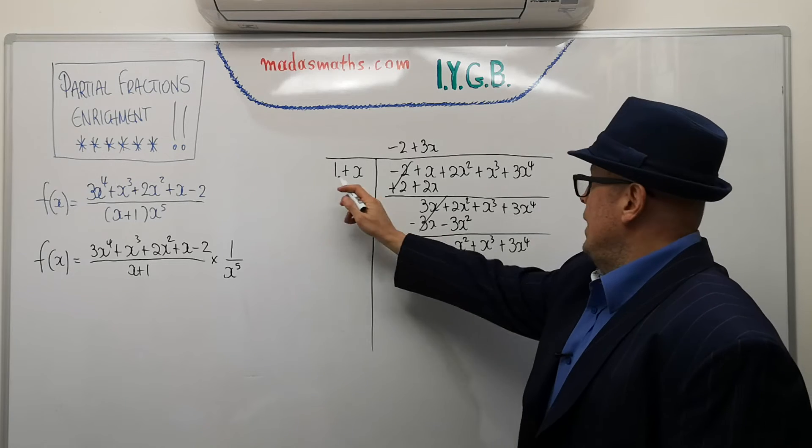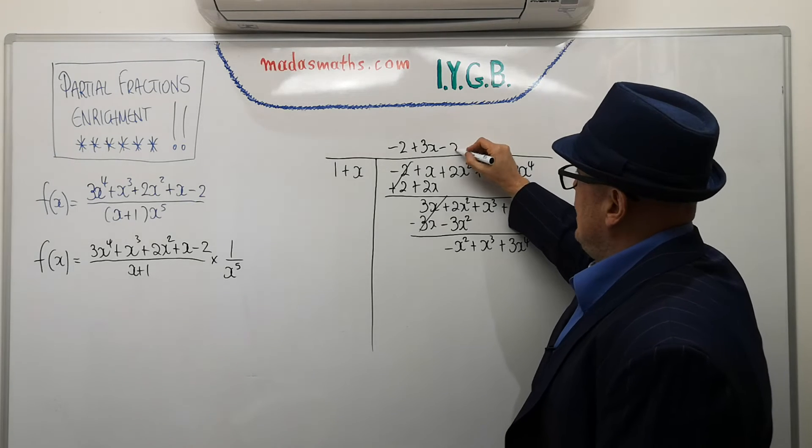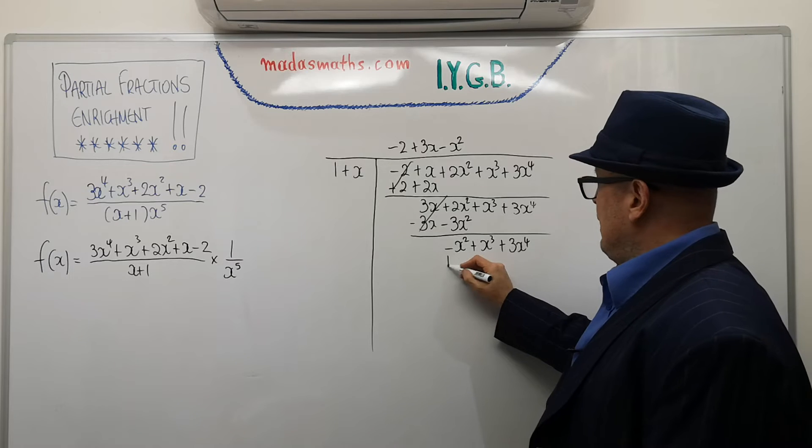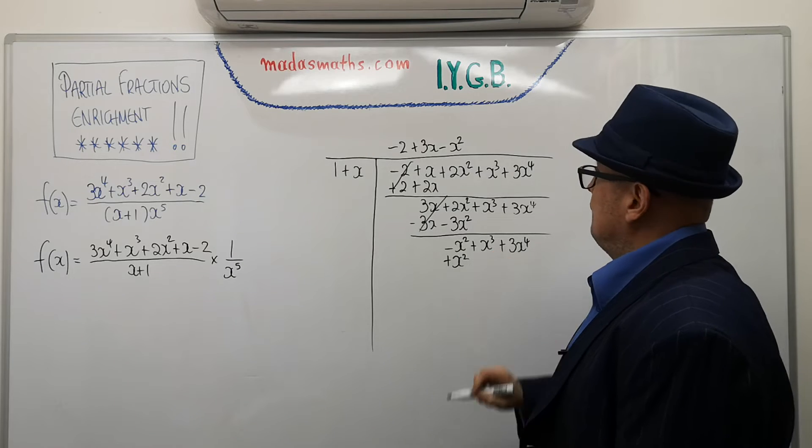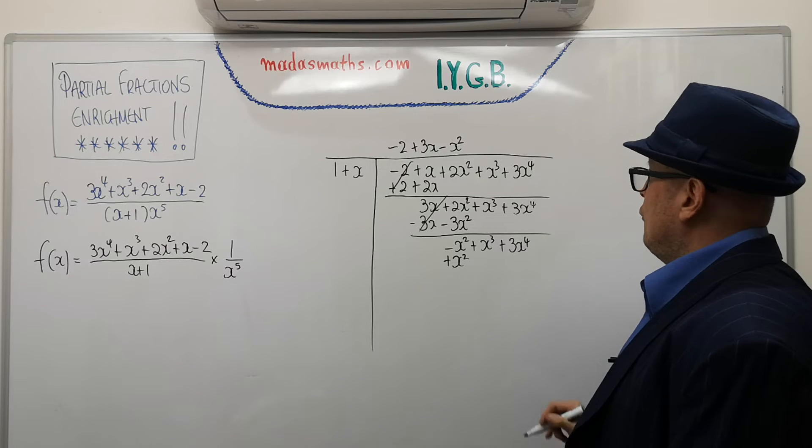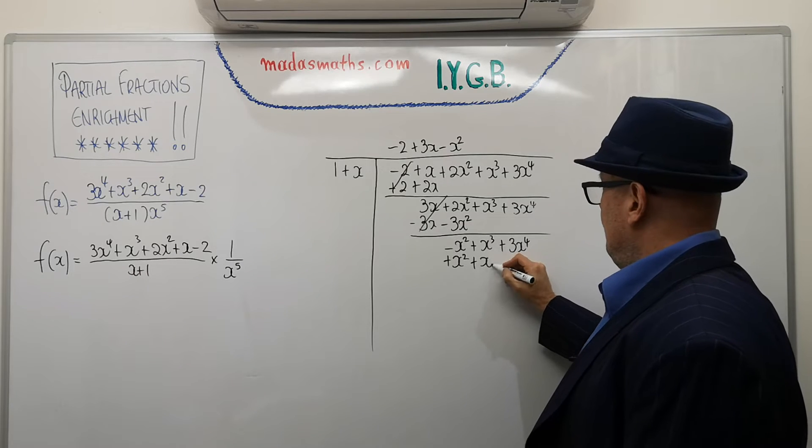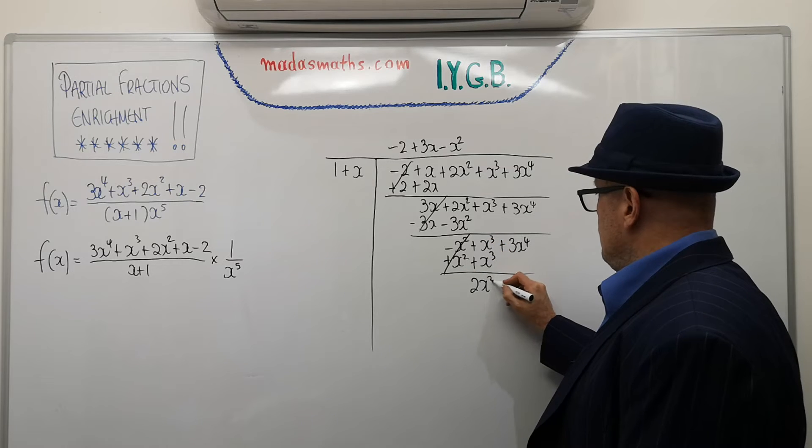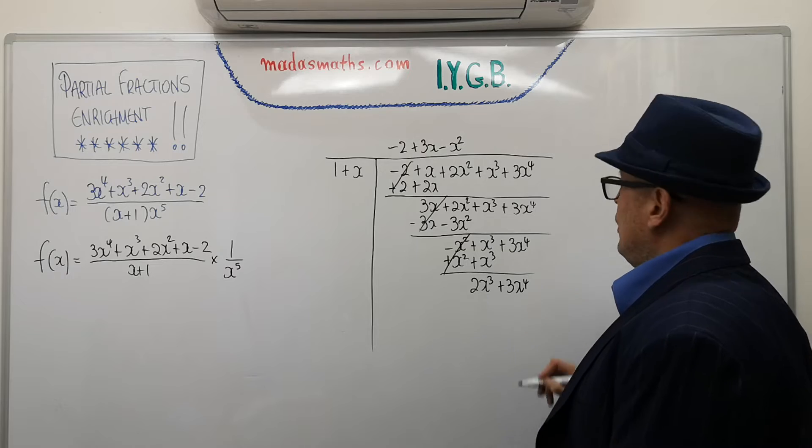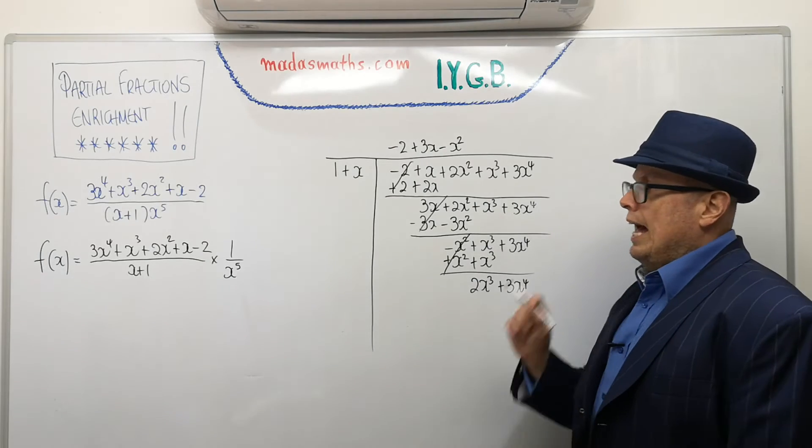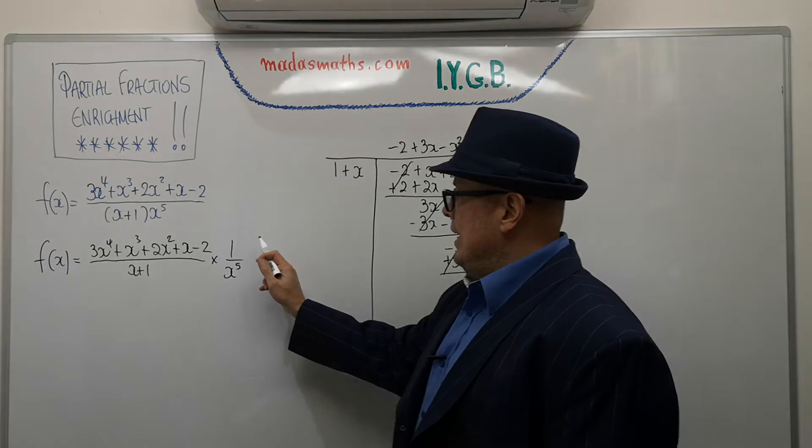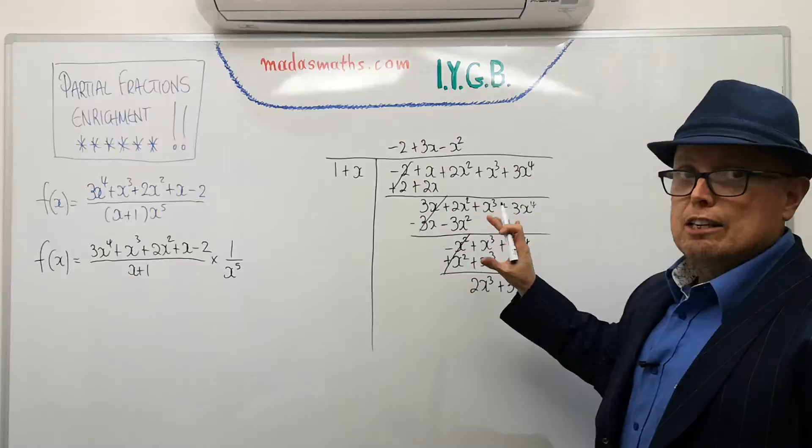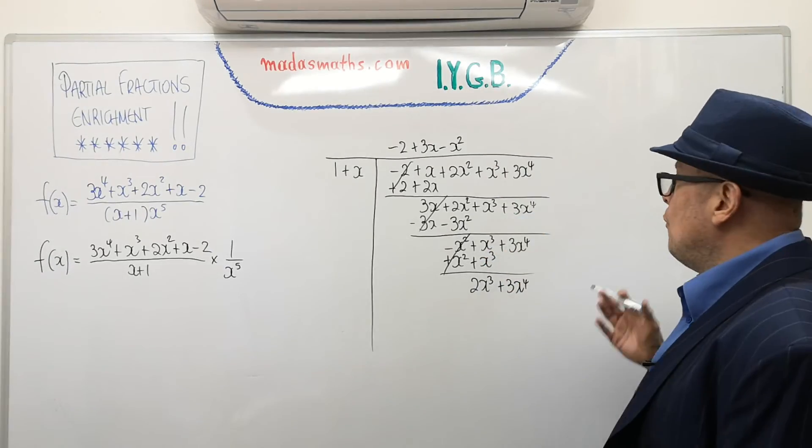Okay. 1 into minus x squared. Quite clearly, minus x squared times. 1 times minus x squared is minus x squared plus x squared. x times minus x squared is minus x cubed plus x cubed. These things cancel. And I've got 2x cubed plus 3x to the 4. Do I continue? Of course. How far will I continue until I get something that works with this 1 over x to the 5. You'll see in a minute when I'm going to stop. Because this particular division does not finish. It can go on forever.